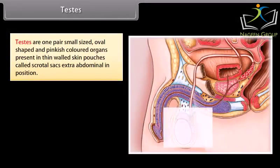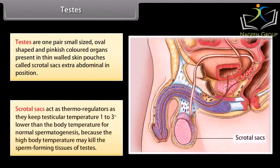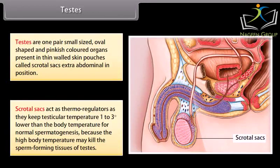Testes are one pair, small-sized, oval-shaped and pinkish colored organs present in thin-walled skin pouches called scrotal sacs, which are extra-abdominal in position. Scrotal sacs act as thermoregulators as they keep testicular temperature 1 to 3 degrees Celsius lower than the body temperature, for normal spermatogenesis, because high body temperature may kill the sperm-forming tissues of testes.